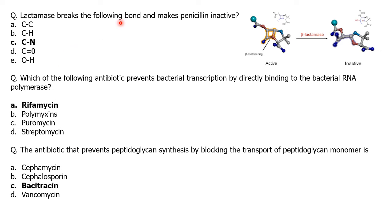A very common question for the beta-lactam group: beta-lactamase is the enzyme which inactivates beta-lactams by breaking a specific bond in the penicillin molecule. The options are carbon-carbon, carbon-hydrogen, carbon-nitrogen, carbon-oxygen, or oxygen-hydrogen. The bond broken by beta-lactamase is the carbon-nitrogen bond. This is the site of action for beta-lactamase, which inactivates the antibiotic.